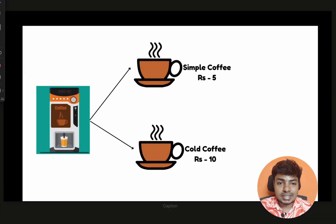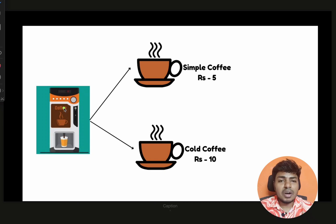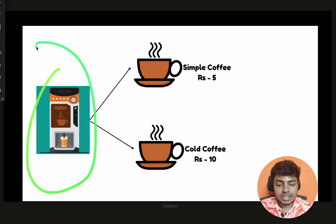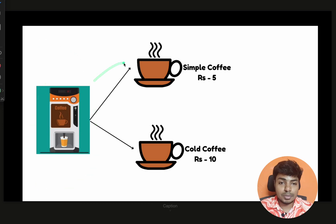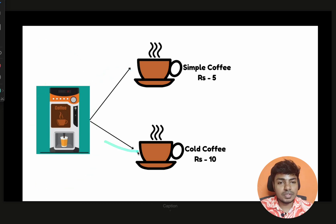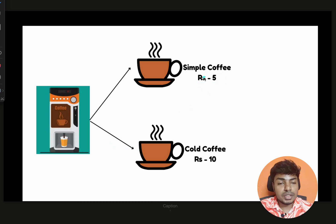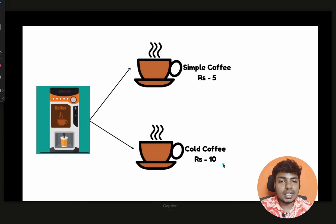Now I am going to give an example: a coffee vending machine. The coffee vending machine currently serves two coffees. One is simple coffee and the other is cold coffee. The difference is cost — simple coffee is 5 rupees, cold coffee is 10 rupees. This is how we represent these as classes in Java.